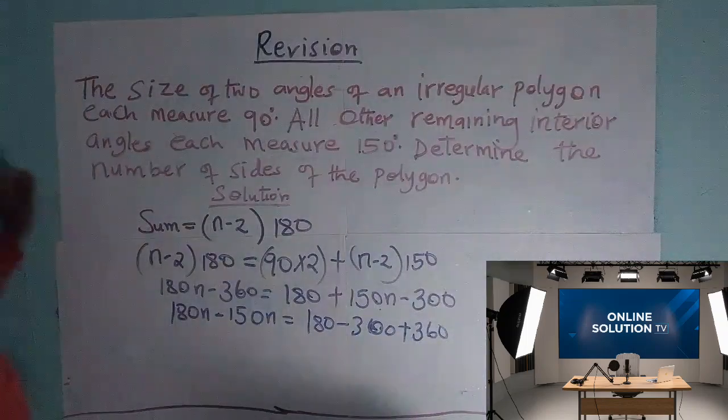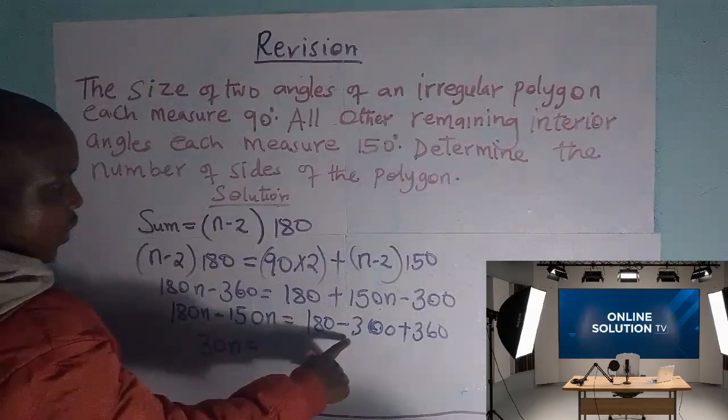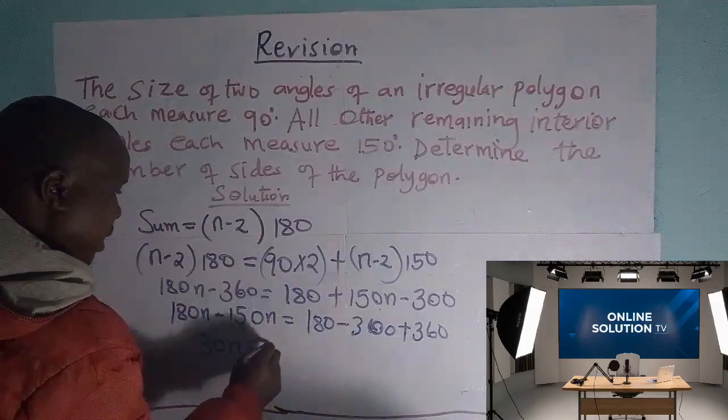So we will have 30n is equal to, this is 60, that is 240.